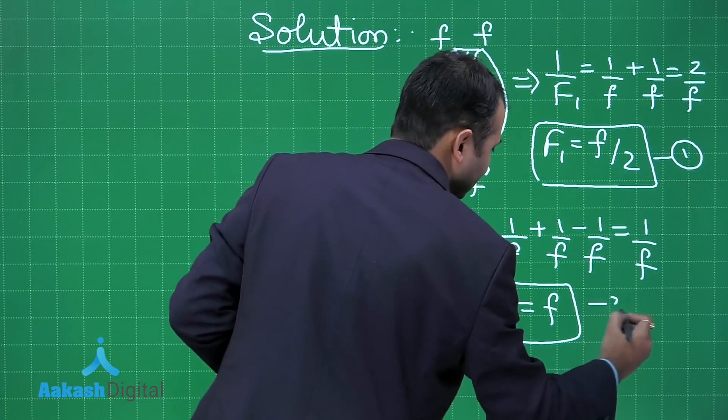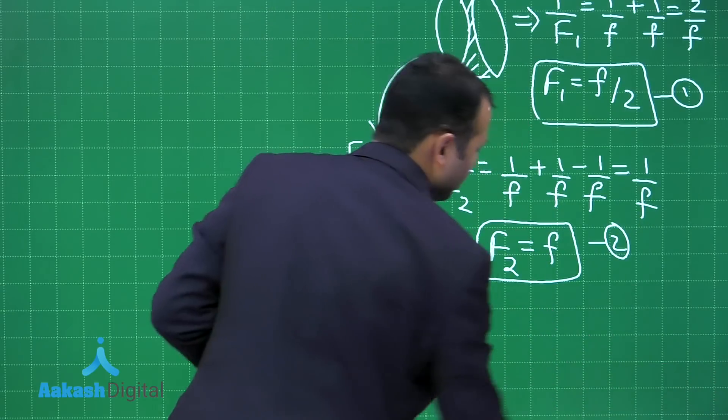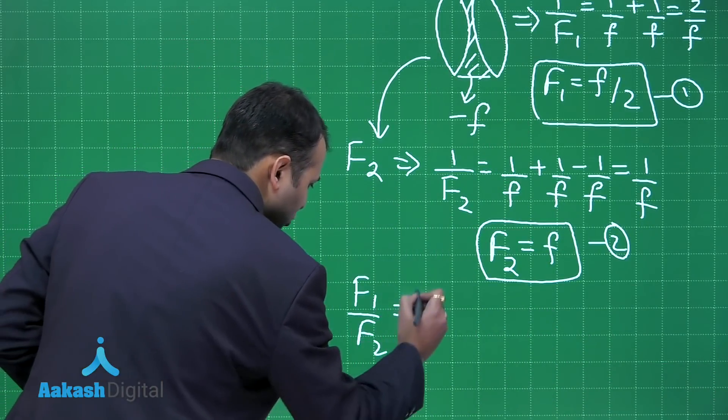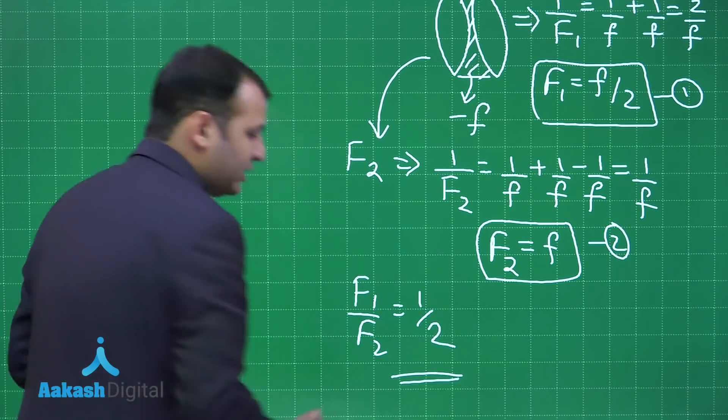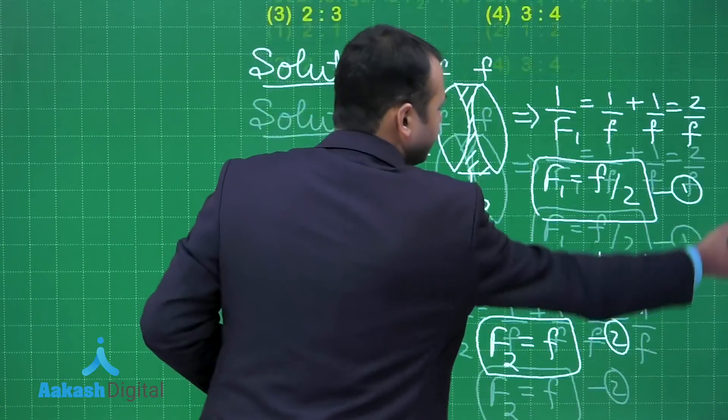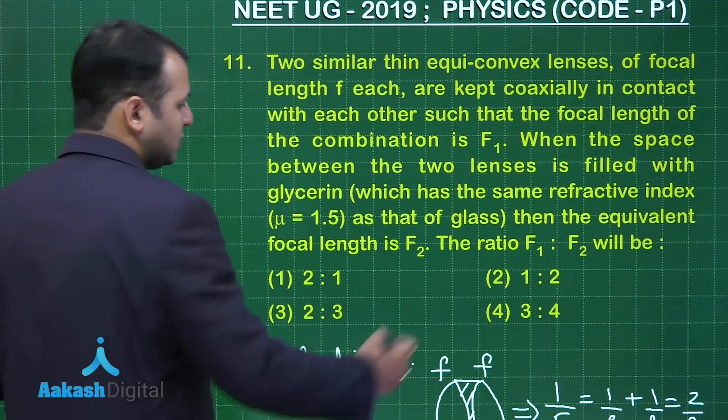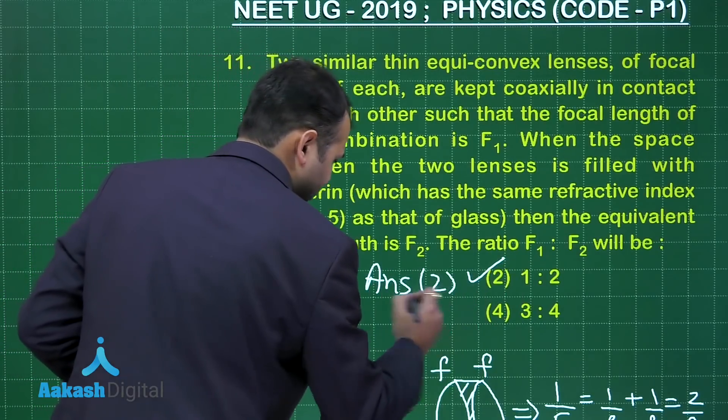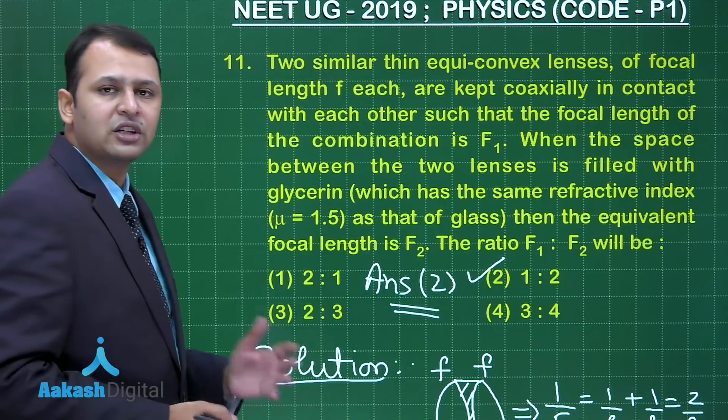So this is first, this is second. We have to find the ratio of F₁ and F₂. Simply it is F₁/F₂ would be equals to 1/2. Let's see which is the best suited option. So among the four options, yes, option number 2 would be the right answer.